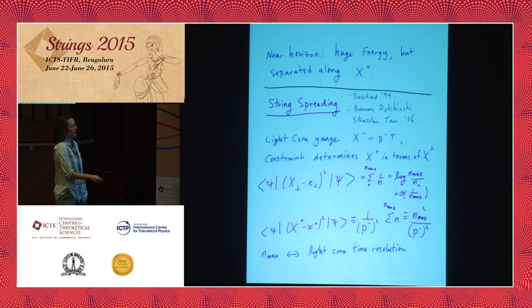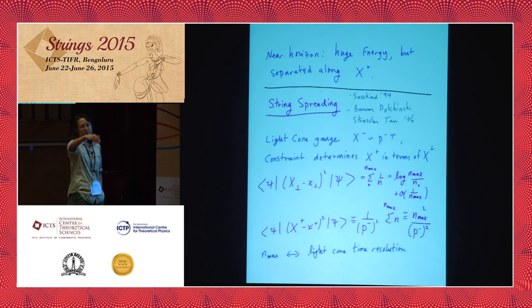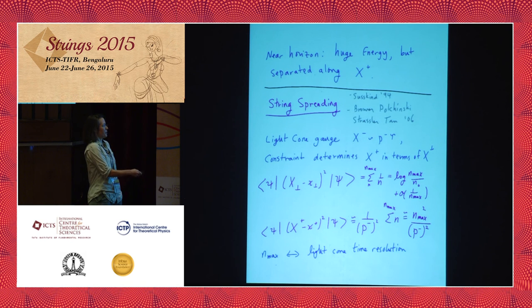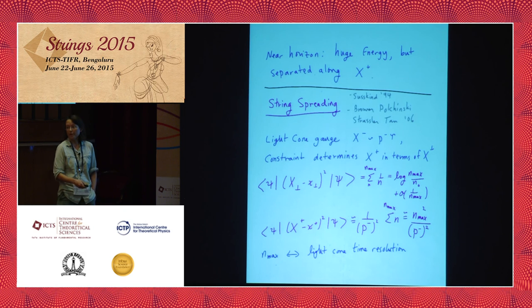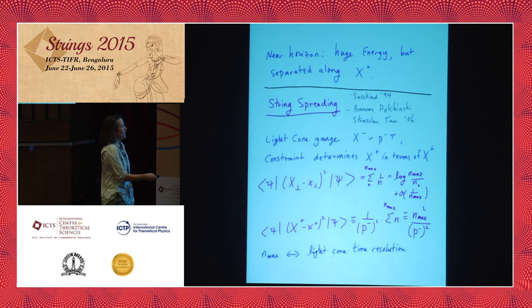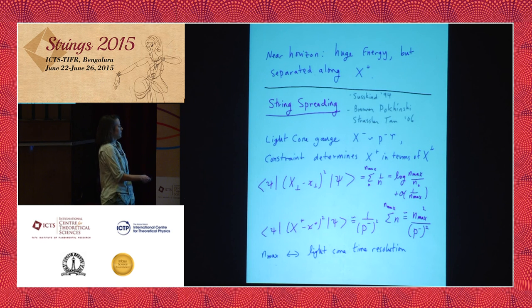In each case the answer is infinity, realized as a sum over the modes of the string. Taking for simplicity a single string ground state — it doesn't matter if you excite it by a small amount above the ground state — this mode sum is dominated by the highest relevant modes. Cutting it off at some maximum mode number N_max, the transverse mode variance goes logarithmically with N_max plus a correction of order 1/N_max, while the longitudinal one is quadratically divergent in N_max.